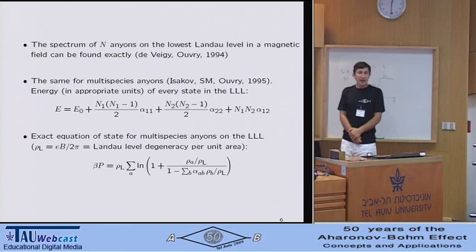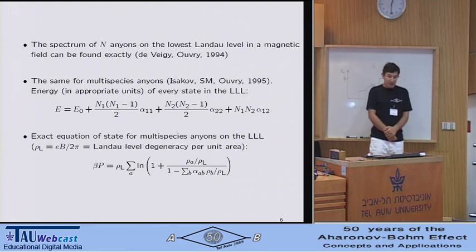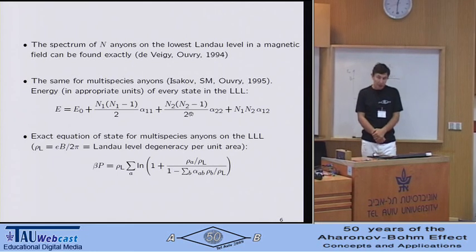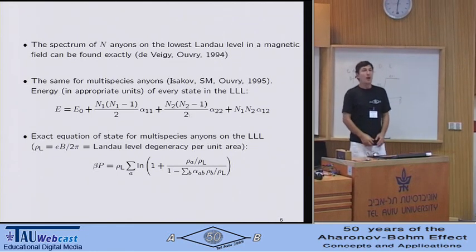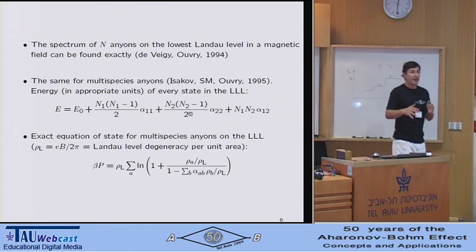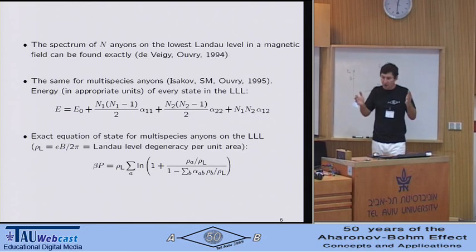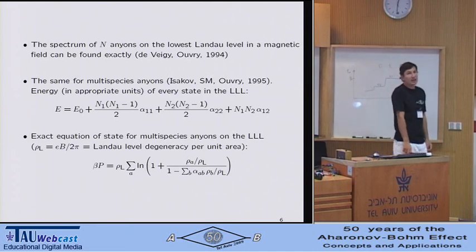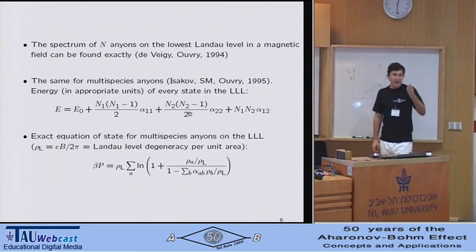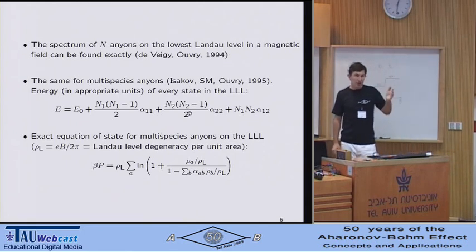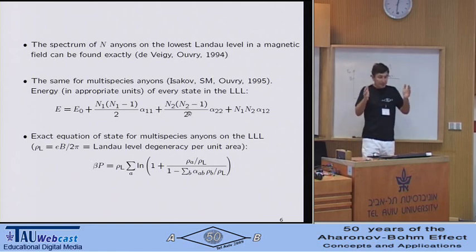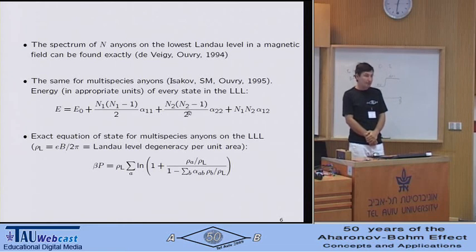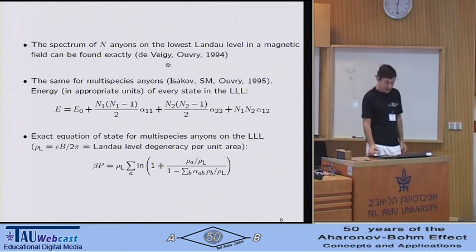Having said that, there is an actual n-anyon problem which is exactly and completely solvable. Specifically, the spectrum of n-anyons on the lowest Landau level of a magnetic field can be found exactly. Well, for the purists among us, this is not a complete solution of a problem. This is only a subset of the states. But practically speaking, it is interesting because if the magnetic field is strong, then it is indeed only the lowest Landau level that contributes to the partition function. So this subset of the spectrum is actually interesting. Well, this subset has been found for single-species anyons and it can also be found for multi-species anyons.